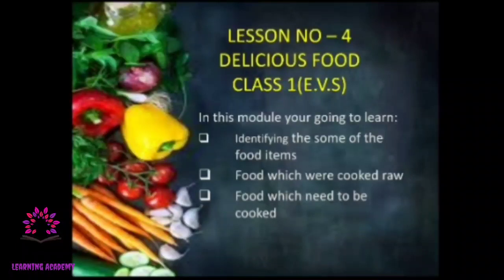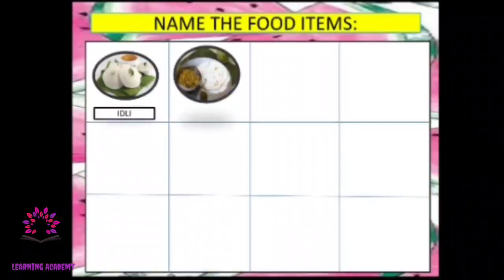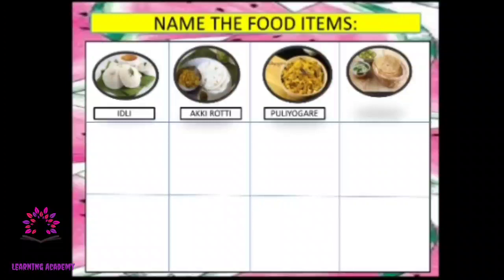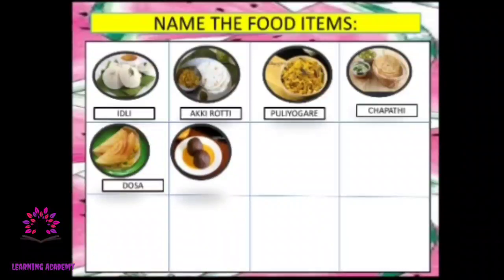Let's begin today's class. Name the food items you can see. This is idli. This is called akki roti. This is known as puliyogare. What is this? You know, right — this is called chapati. Some of you might like this — dosa. And this is ragi muddi.